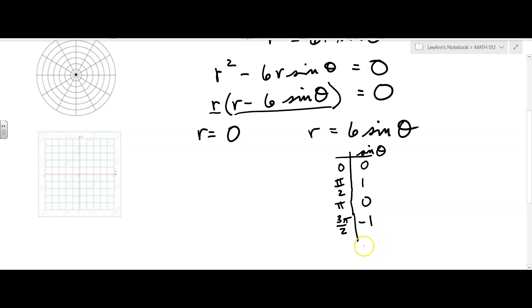And then if we go a complete circle, 2 pi, we're back to 0 again. Okay, but remember we want to find 6 sine theta. So this is my theta, 6 sine theta. So 6 times 0 is 0, 6 times 1 is 6, 0, negative 6, and 0.